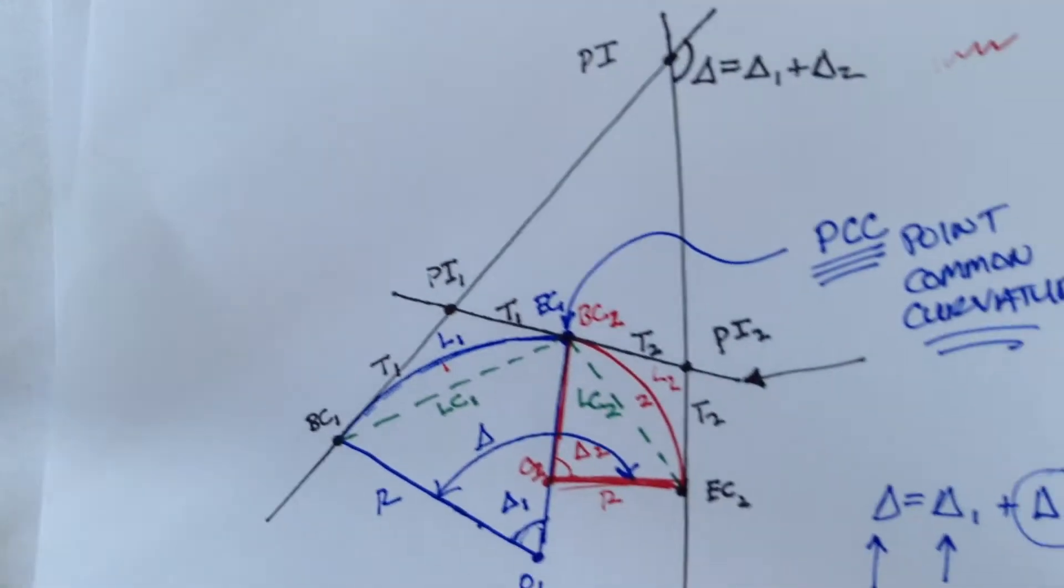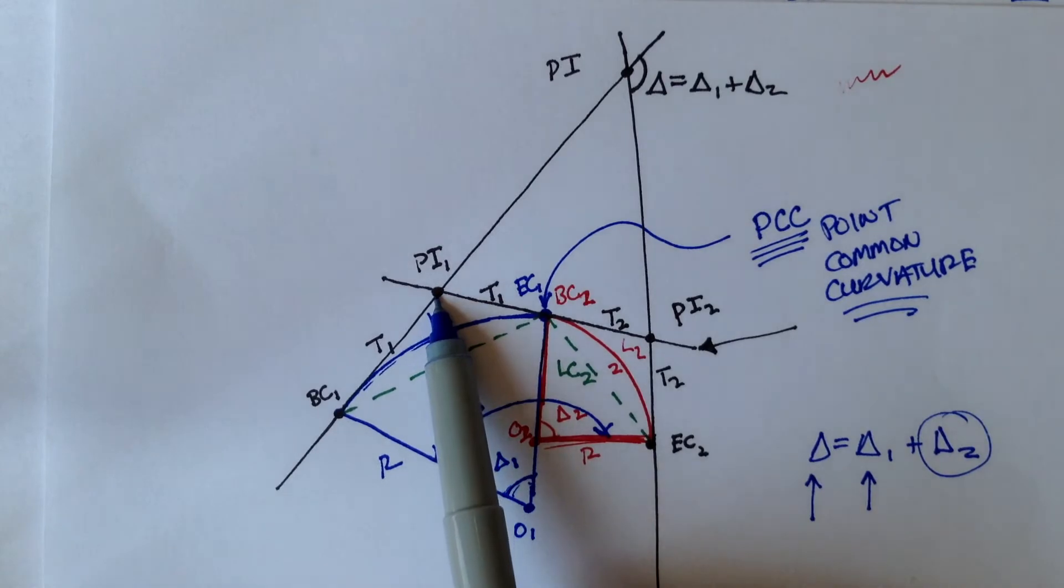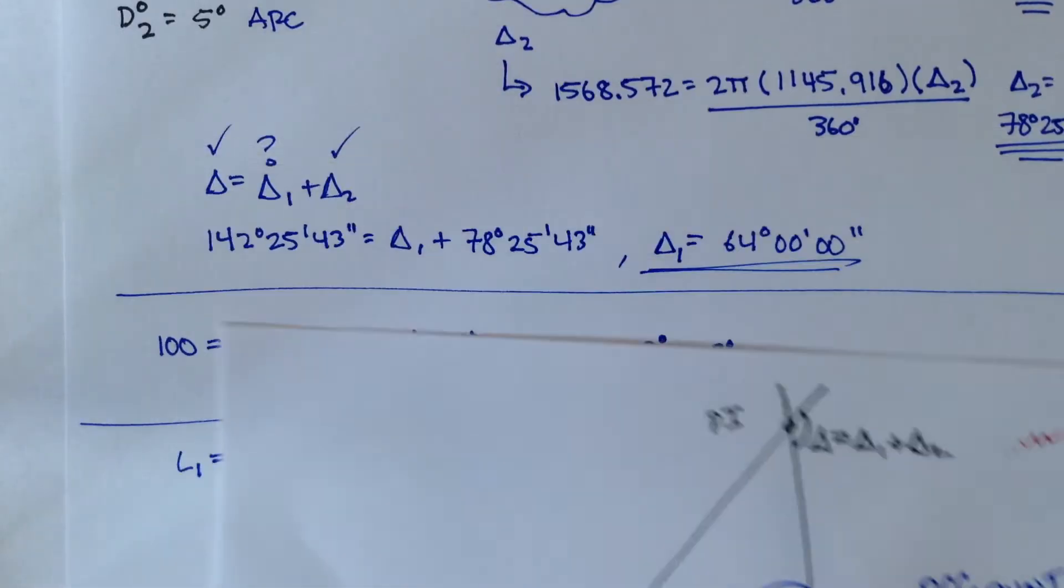And if we look at this general diagram for compound curves, we need to figure out what PI1 is. And in the problem,